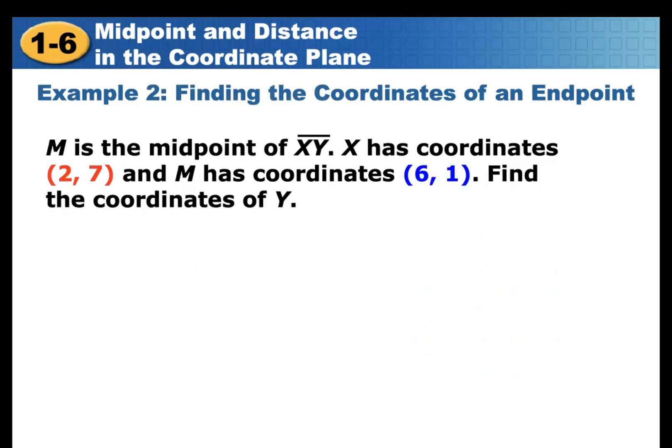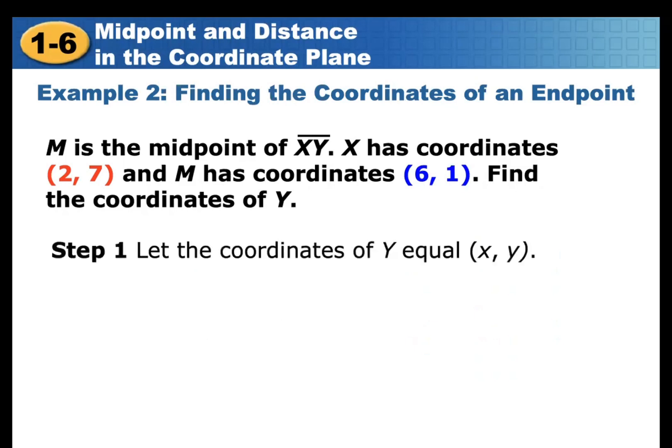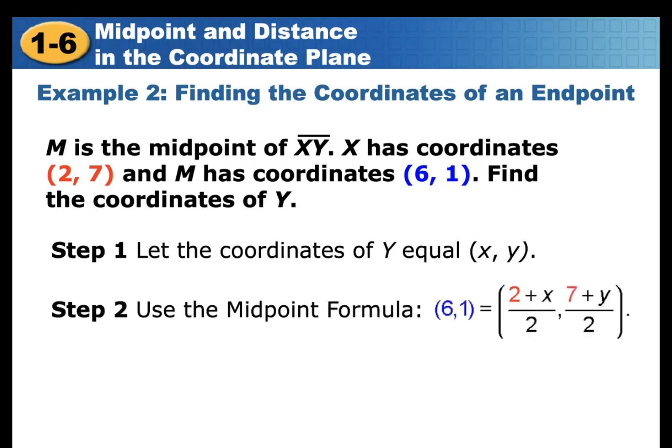Another example: find the coordinates of an endpoint. Given is the midpoint. M is the midpoint of line segment XY. X has coordinates (2, 7) and M has coordinates (6, 1). Find the coordinates of Y. Let the coordinates of Y equal (x, y), then use the midpoint formula.